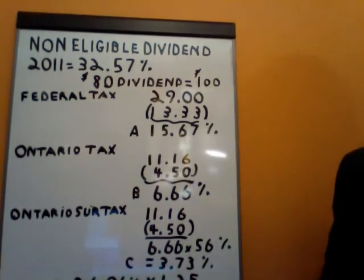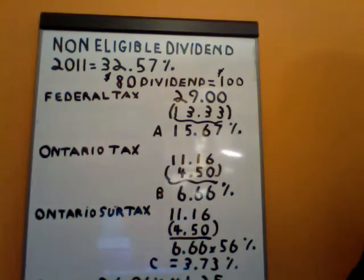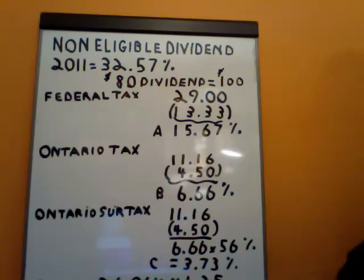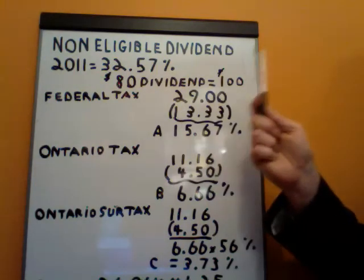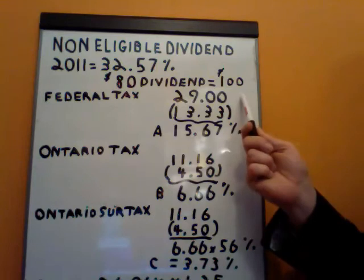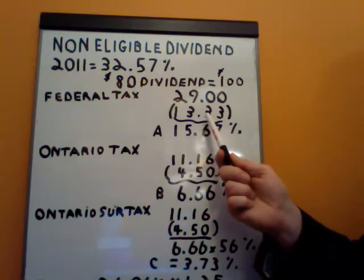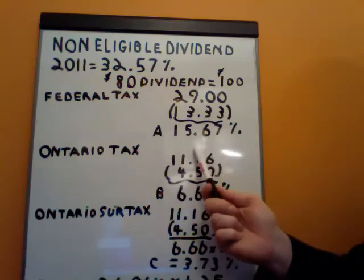Non-eligible dividends for 2011 — our rate is 32.57%. Dividends coming out of a CCPC, which is subject to the small business deduction limit and generally pays corporate tax at 15.5% — a dividend of $80 must be grossed up by 1.25%. So 80 times 1.25 is $100. Now we calculate the federal tax on $100. The top marginal federal tax rate is 29%. We deduct our federal dividend tax credit of 13.33%, giving us 15.67%.